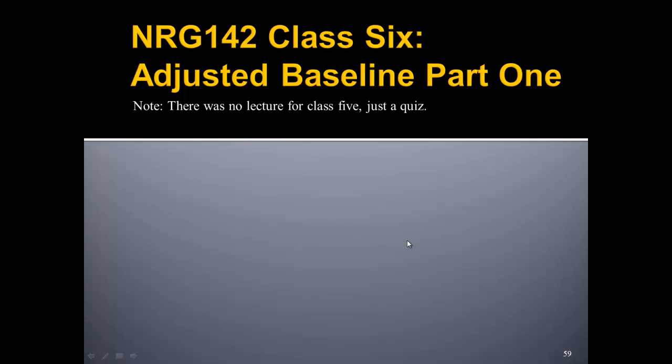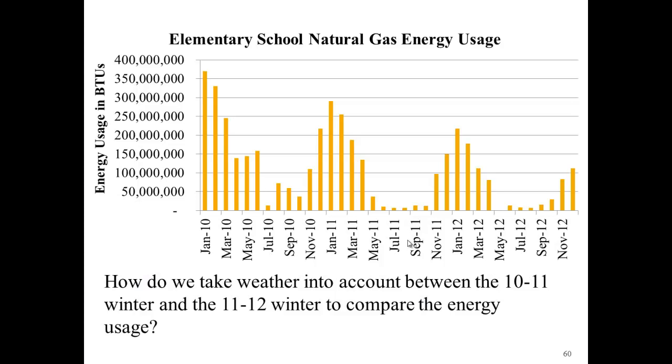Let's start with the motivation. This is the elementary school, and this is their natural gas usage for a period of about three years. Let's look at a couple different Januaries. Here's year 1, here's year 2, and here's year 3. We can really see that over this three year period, the natural gas use has really dropped from this year to this year to this year.